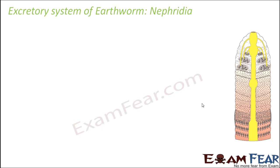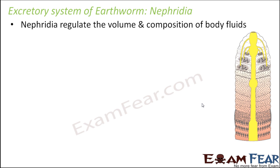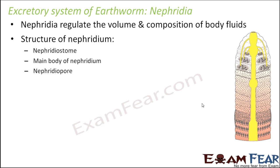The nephridia regulate the volume and composition of the body fluids. The fluids which move from the internal environment into the nephridia contain all the excess water or excess ions present in the body, helping to regulate the composition of body fluids. The structure of a nephridium consists of three parts: the nephrostome, the main body of the nephridium, and the nephridiopore.